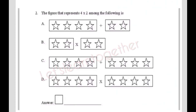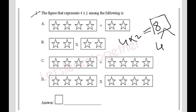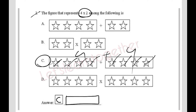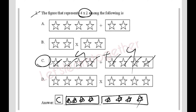Question 2: Which figure represents 4×2 among the following? 4×2 = 8. This means 4 groups of 2, or 4+4=8. The correct figure shows two groups of 4 stars each. The answer is option C. You have to draw the stars neatly — 1,2,3,4 and again 1,2,3,4.